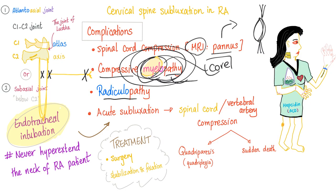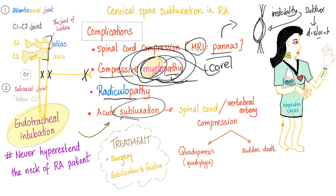Think of it like the lens in your eye: first there is instability, then subluxation — which means partial or incomplete dislocation — and then full dislocation. Same sequence here: first cervical instability, followed by subluxation, and possibly dislocation.